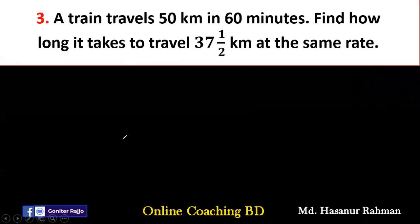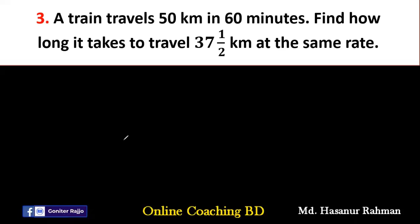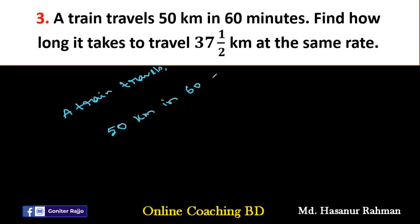Number 3: A train travels 50 km in 60 minutes. Find how long it takes to travel 37 and a half km at the same rate. So 1 km takes 60 divided by 50 minutes.